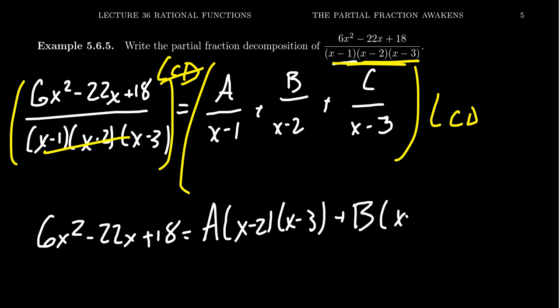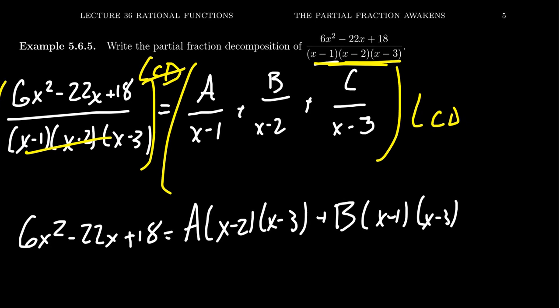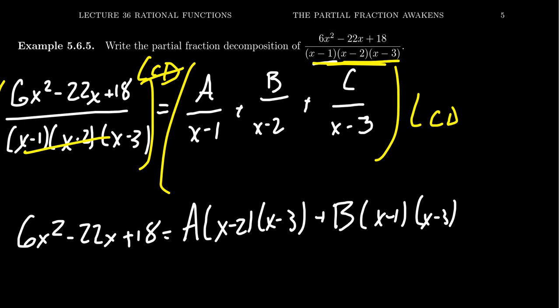And so you're going to do that for the other pieces. We're going to get B times x minus 1 and x minus 3, that's what it was missing. And then you're going to get C times x minus 1 and x minus 2.